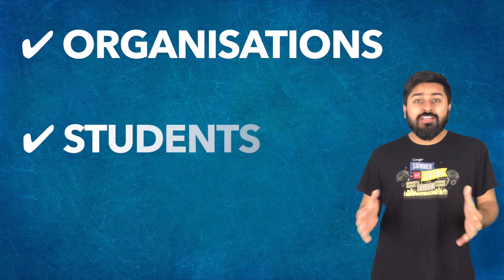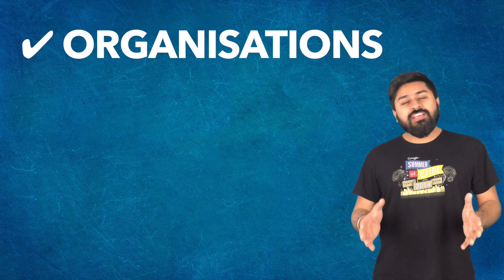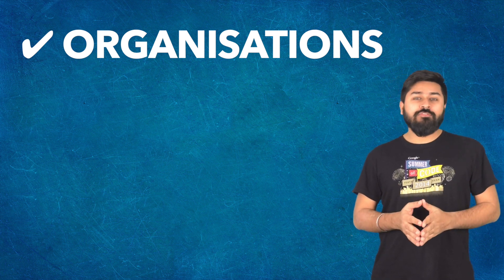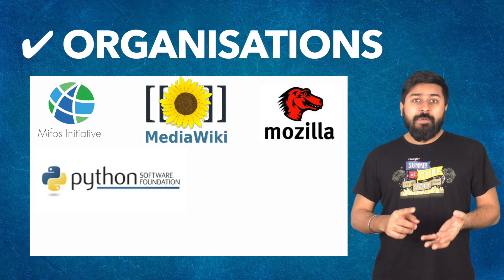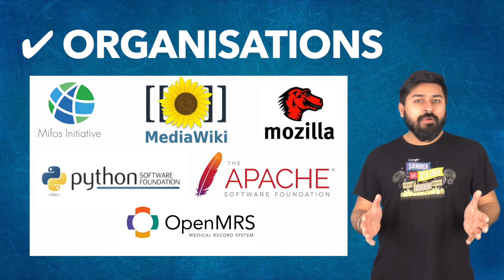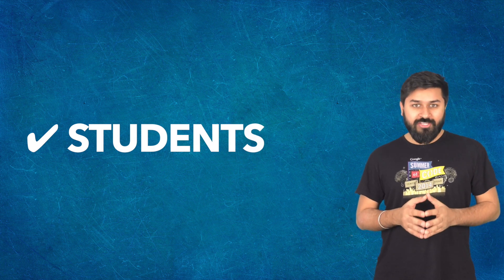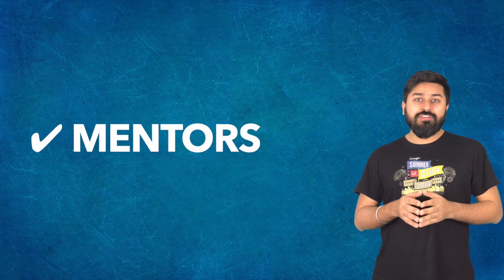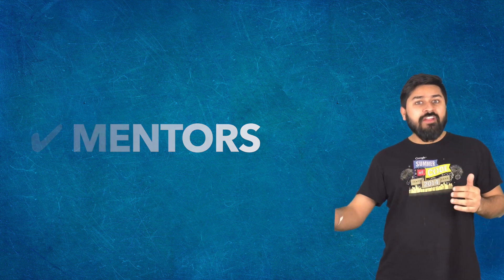Before we understand how it works, I'd like to mention three keywords in the context of Google Summer of Code, because we're going to use these terms over and over again. Organizations are the open-source projects that apply to be a part of the program — for example, BIFO's Initiative, MediaWiki, Mozilla, Python Software Foundation, Apache, OpenMRS, and many more. Students are people who meet the minimum eligibility criteria for the program in order to apply for a project. Mentors are existing contributors in open-source projects that help students from day one till the very end of the program.